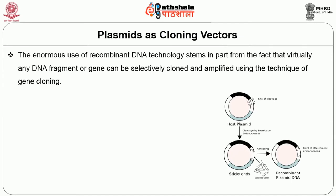Plasmids are classified as high copy number or low copy number. The copy number of most genetically engineered plasmids is high — for example, 200 or so. Bacterial cells harbor several hundred copies of cloning vectors per cell, so large amounts of a cloned DNA sequence can be recovered from bacterial cultures. Virtually any DNA fragment or gene can be selectively cloned or amplified using the technique of gene cloning.